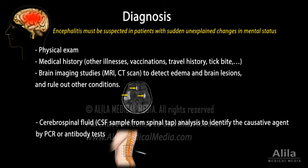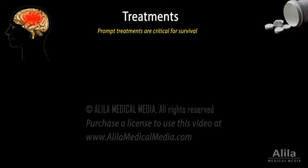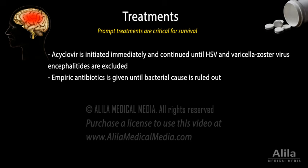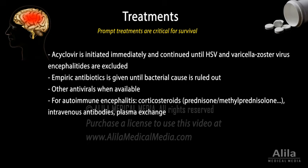Because prompt treatment is critical for survival, several medications may be started before the causative agent can be identified. Treatment with antiviral acyclovir is often initiated immediately and continued until HSV and varicella zoster virus encephalitides are excluded. Empiric antibiotics may be given until a bacterial cause is ruled out. Treatment for autoimmune encephalitis may include corticosteroids, intravenous antibodies, and plasma exchange.